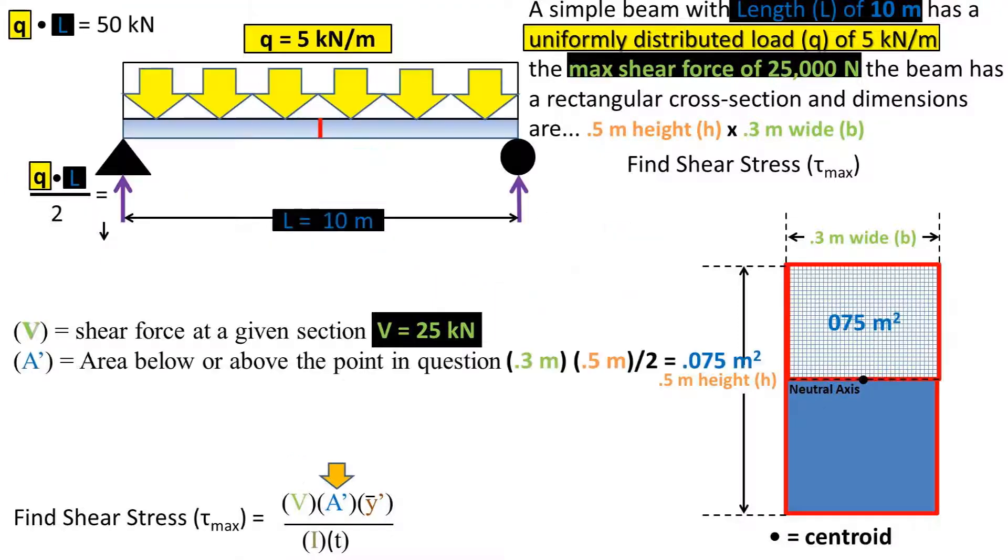For the max shear force, the A prime is the area below or above the point in question, or the area from the point in question to the outermost fiber. Our point in question is at the neutral axis because this is where the max shear stress happens. And the area will be the area above the neutral axis, which is base times height over 2, or half the cross sectional area.